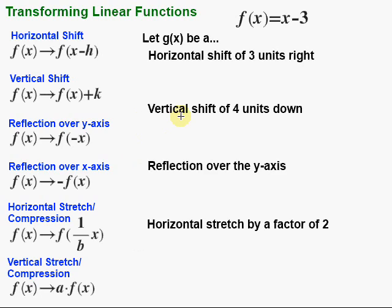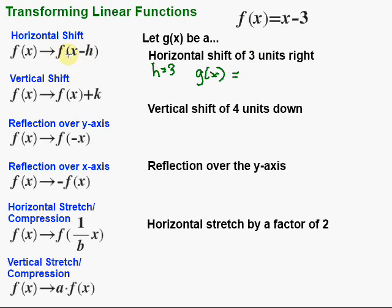Let's go ahead and dig into some of these. The first one says we're given this function f of x, and it says let g of x be a horizontal shift three units to the right. Horizontal shift — here's our recipe. Three units to the right: what number represents three to the right? Well, a positive three. So my h is going to be a positive three, h equals 3. Then g of x is going to be equal to f of x minus h, and since h is 3, we have x minus 3.